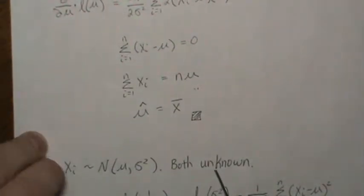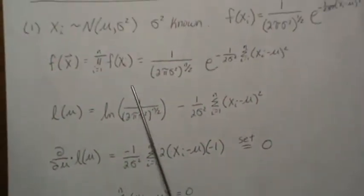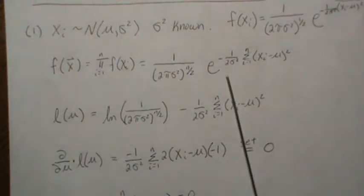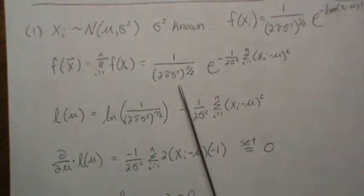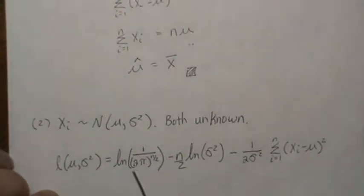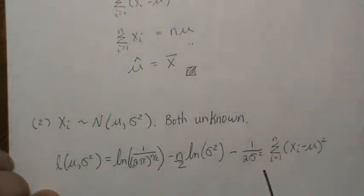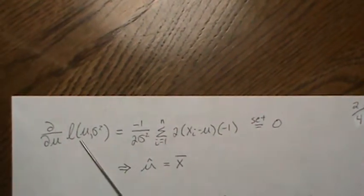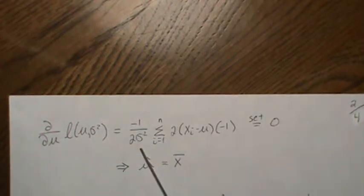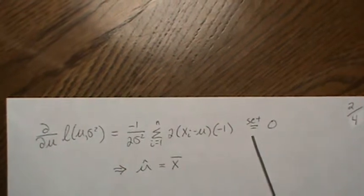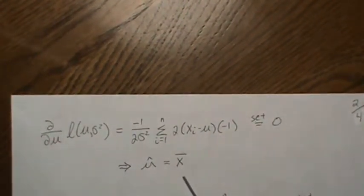In the second case, both μ and σ² are unknown. The joint density is the same, but when we take the log of the likelihood we have to keep σ² explicitly. The log likelihood has a term with −n/2 · log(σ²) out front and then the sum term. Taking the partial with respect to μ gives the same result as before: setting it to zero yields μ̂ = X̄.